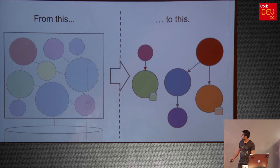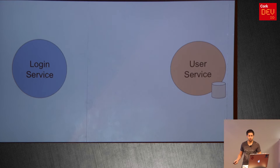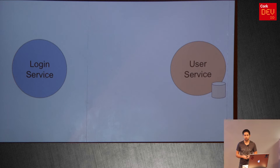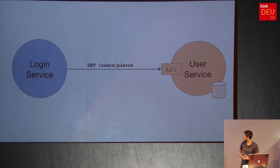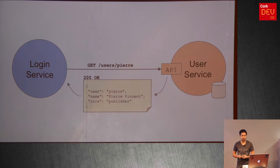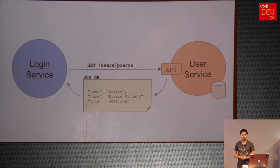So what does that interaction look like? Let's take a simple example of two teams working on two different services. One is a login service — you type in your login and password and you're in. Another team is responsible for the user service, which has a database of users with all sorts of information. Typically, the login service needs to get a user, so it communicates with the user service through a REST API and issues a GET request for slash user slash Pierre. The user service responds with a 200 and returns username, name, and a role useful for determining privileges.